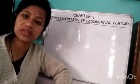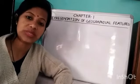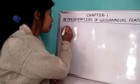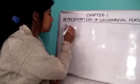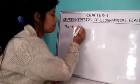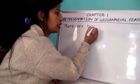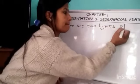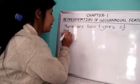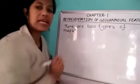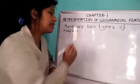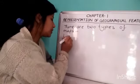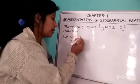Generally, there are two types of maps scale-wise: large-scale maps and small-scale maps.